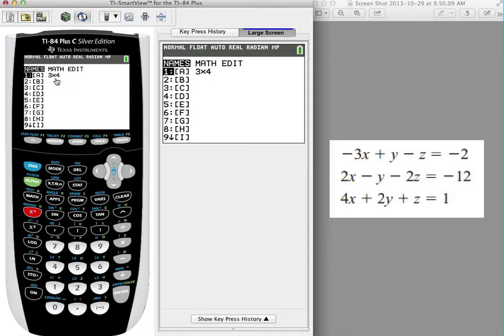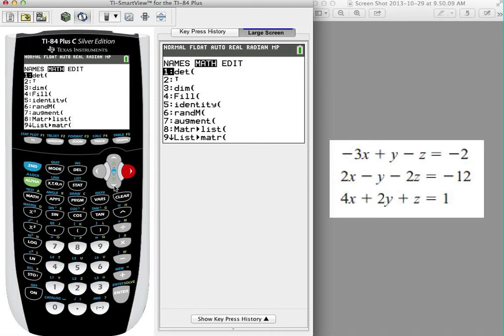And I want to use that, but I need to do some math with it. So I'm going to scroll over to the math menu, and I'm going to go down, I believe it's all the way down to option B down here.